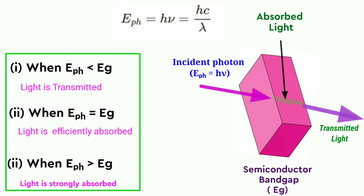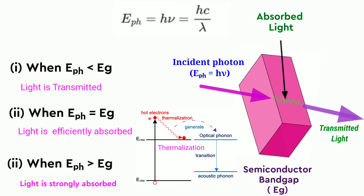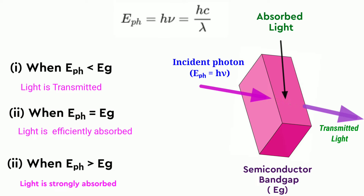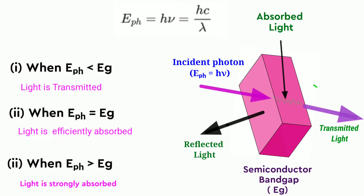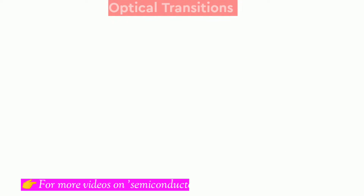For photovoltaic applications, photon energy greater than the bandgap is wasted as electrons quickly thermalize back down to the conduction band edges, producing electrons in the conduction band and holes in the valence band. By minimizing reflection and transmission losses, one can enhance the absorption of the incoming optical signal.